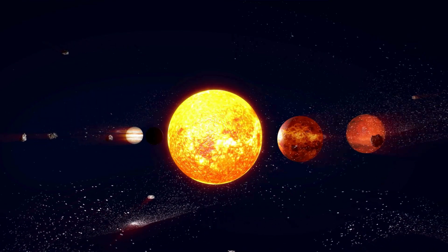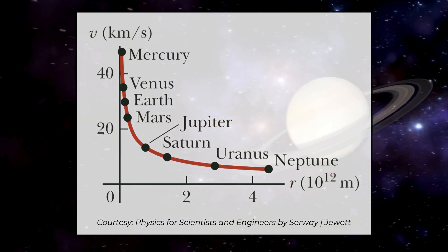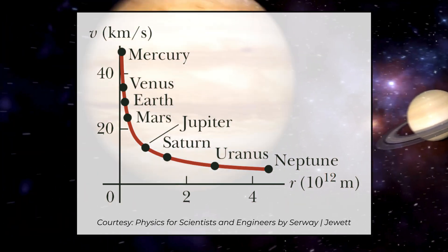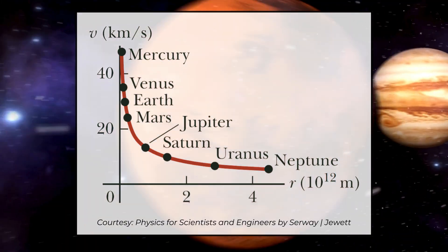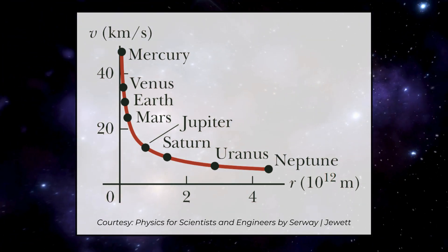When we check this for planets going around the Sun, we see the same thing. In this graph, we can see this happening for all eight planets in our solar system. The line in a reddish-brown color predicts how fast planets should go based on how far they are from the Sun.